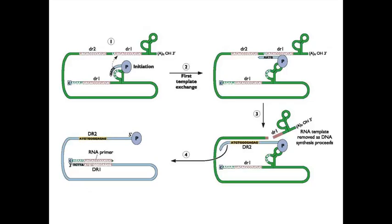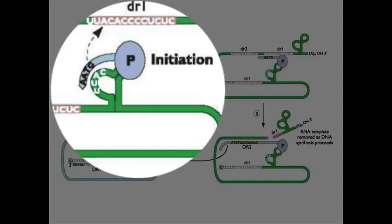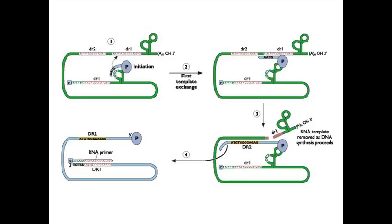What it does is uses a primer that is attached to the reverse transcriptase. So reverse transcriptase is called P. It has a little piece of DNA on it that serves as a primer, and it hybridizes to the RNA up here in this DR1 region. So you can see this is slightly reminiscent of reverse transcription in retroviruses.